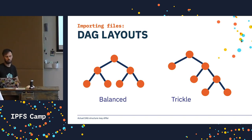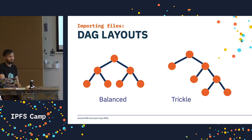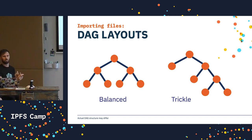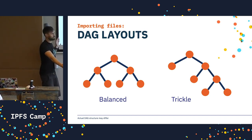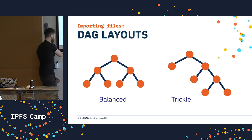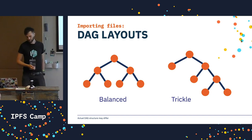There are also different graph layouts with different performance characteristics. Balanced layout is the default when you 'ipfs add' — it's really simple to build and easy to traverse, but difficult to edit in the middle since you'd have to do a lot of rebalancing. Trickle layout is more difficult to build but great for streaming, because the time to first byte is much less. With a balanced DAG, to start streaming a big movie file you'd have to traverse several nodes before you could start — trickle gives much better time to first byte.